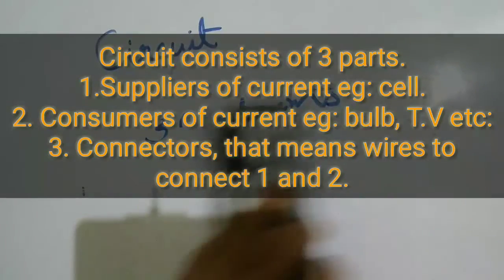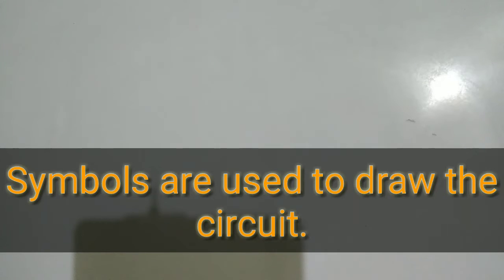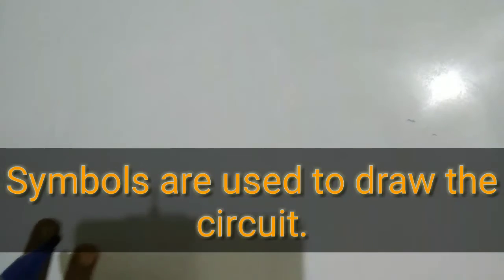We have seen in the previous video the symbols used for drawing the circuit. We cannot draw the thing as a whole, so we use some symbols in order to represent them. That we have discussed in my previous video — please go through that for getting the symbols. So circuit is a closed path.